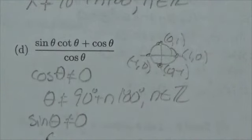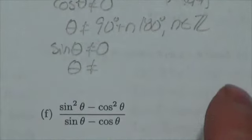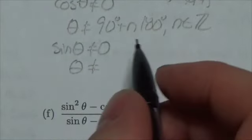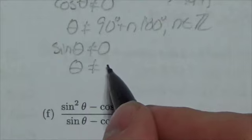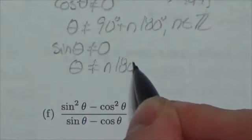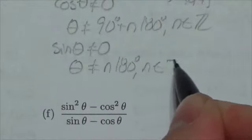So theta can't be—in this case, it might be easier to write just n times 180, where n is an element of the integers. Remember, we use Z for the integers.